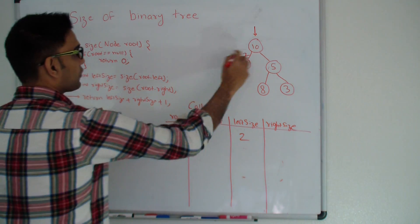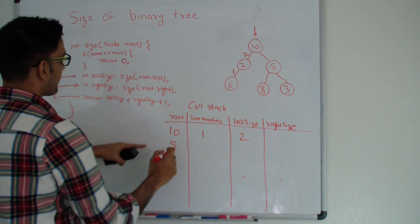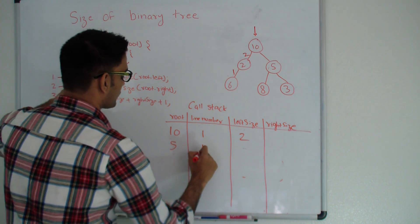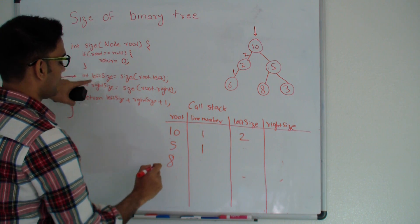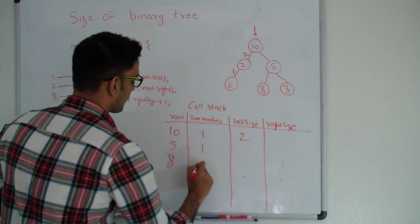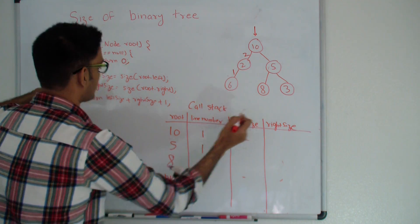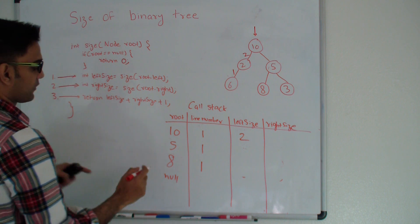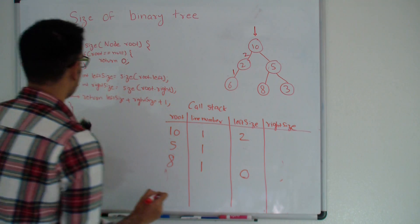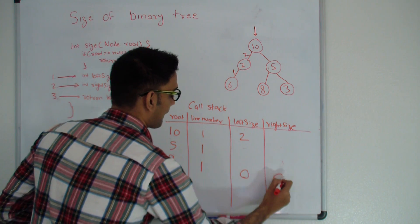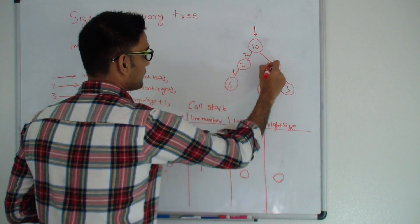Now node 10 goes on its right side, which is node 5. Node 5 is not null so it goes into its own recursion from line number 1 with node 8. Node 8 is not null so it goes into its own recursion. Node 8's left is null, so it gets 0 from the left side and 0 from the right side. So node 8 returns 0 + 0 + 1 = 1 back to node 5.